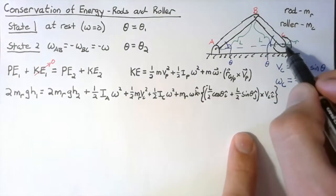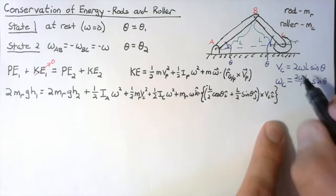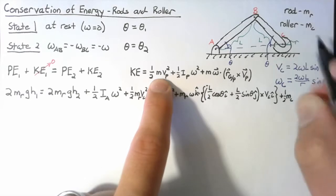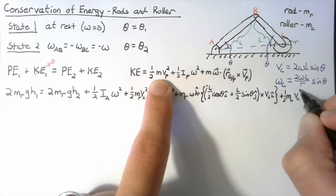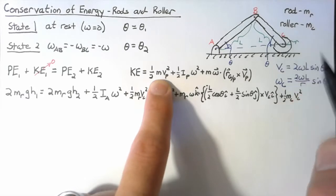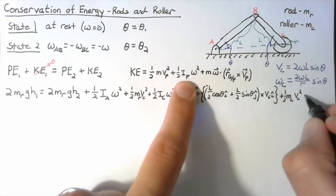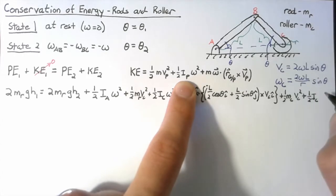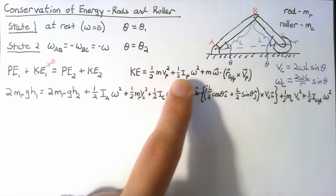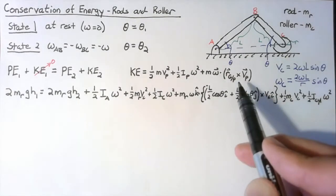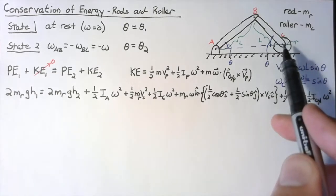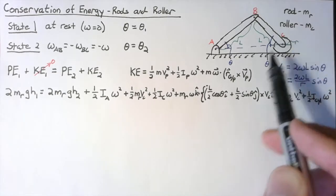Our last terms come from the rotation of the cylinder. We get one-half times mC times vC squared — the velocity of the center of mass — plus one-half times I_cylinder times omega_C squared. The final cross-product term is zero because the center of mass of the roller and the reference point are the same point.